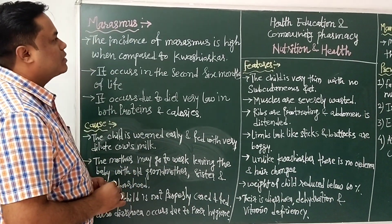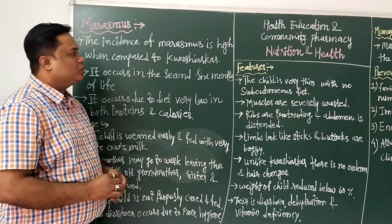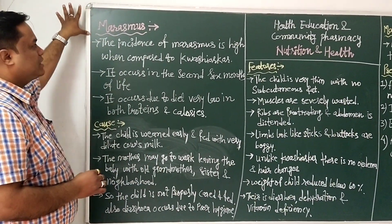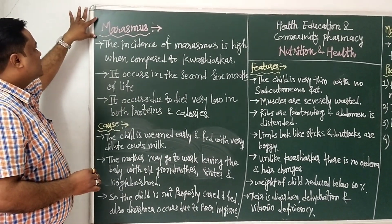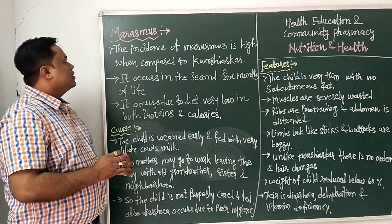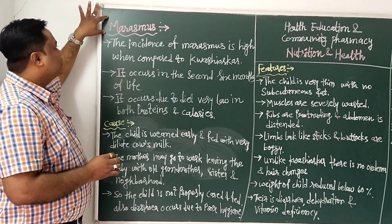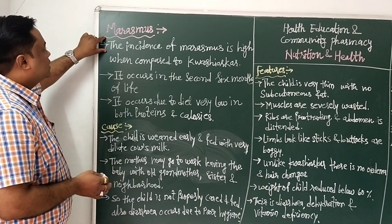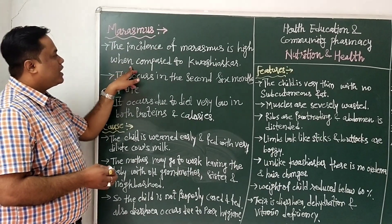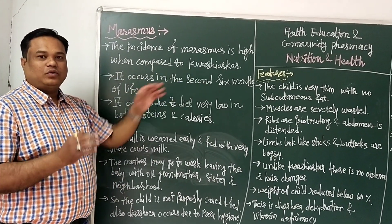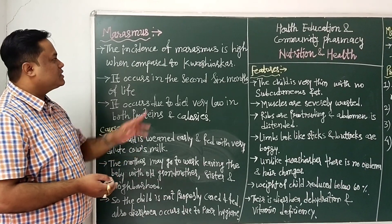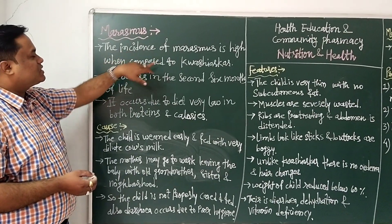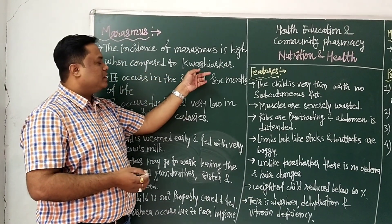Today's subject is Health Education and Community Pharmacy, and we will see Chapter 2, that is Nutrition and Health. In this lecture we will see the protein deficiency disease called marasmus. Marasmus is a deficiency of protein due to severe malnutrition. There are two protein deficiency diseases: the first is Kwashiorkor and the second is marasmus. The incidence of marasmus is high as compared to Kwashiorkor.